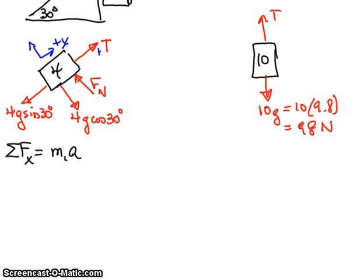And the 4G sine 30, which is the component of its weight, is going to be a negative arrow. So then we'll know how to combine them in the equation. And so when we write this, we'll have two forces.